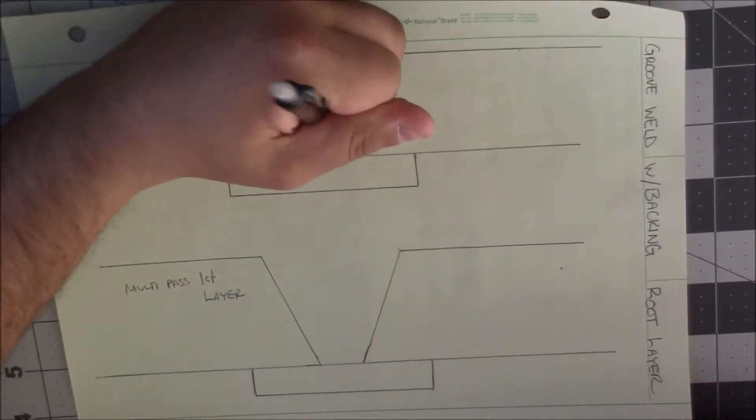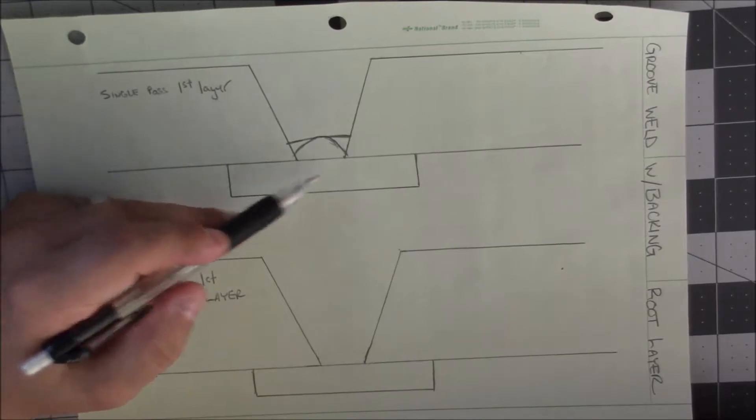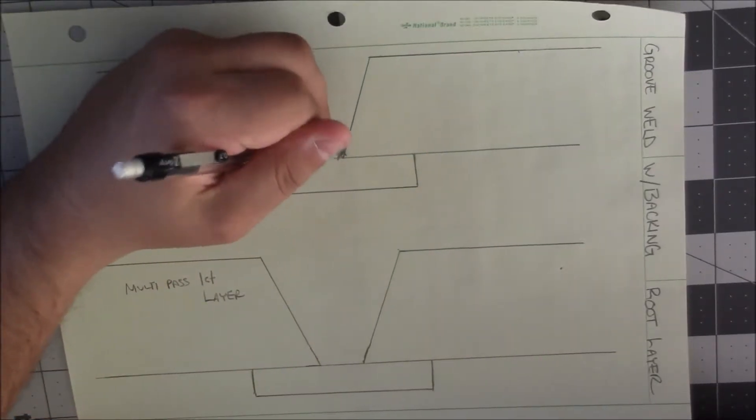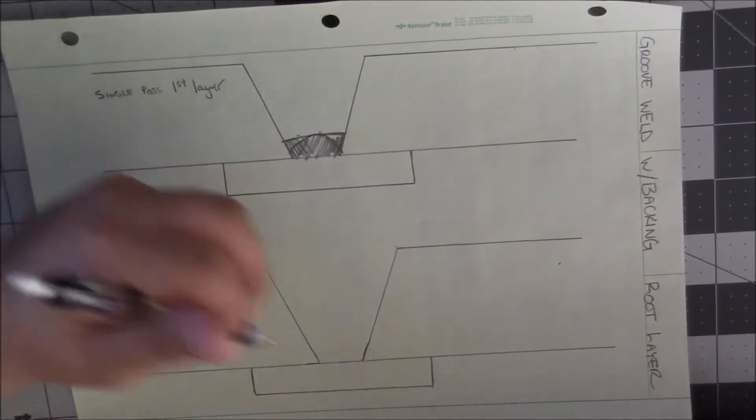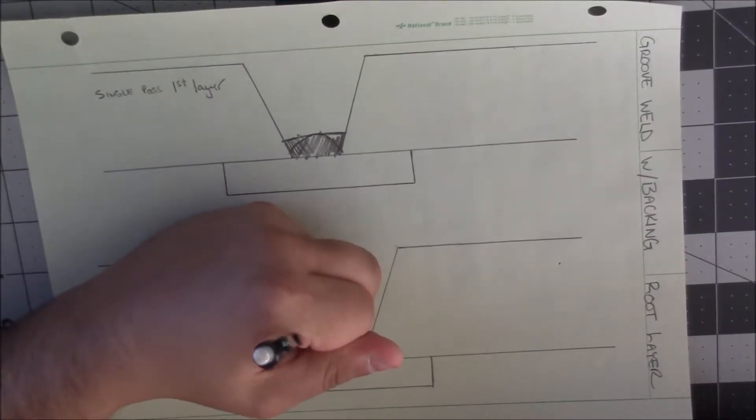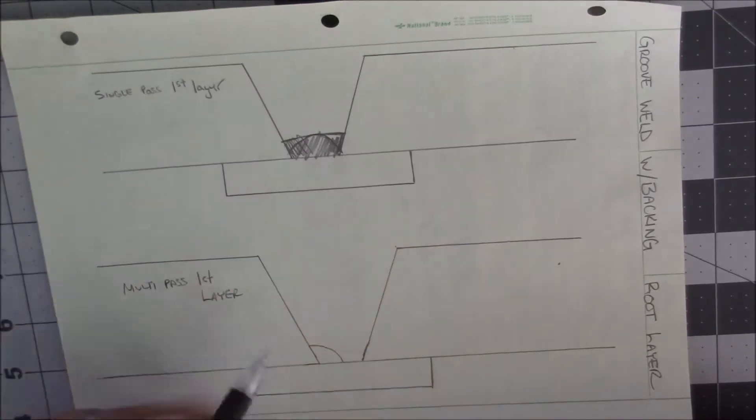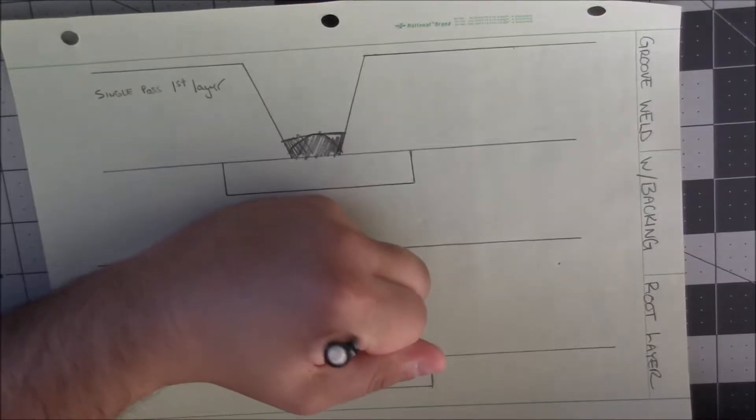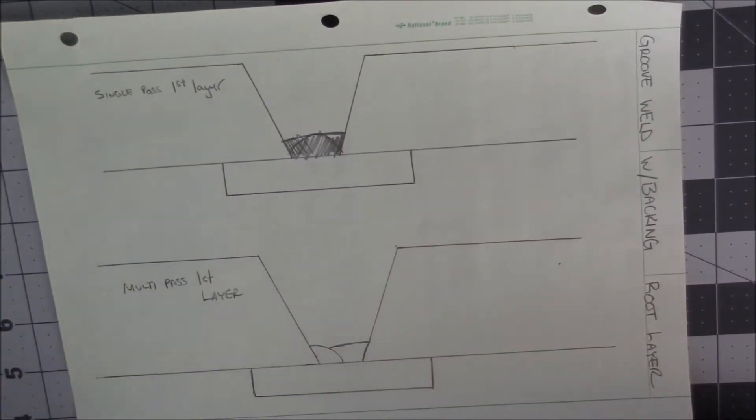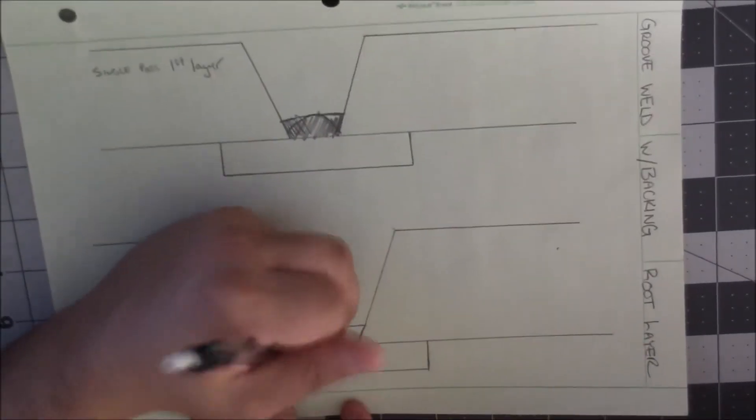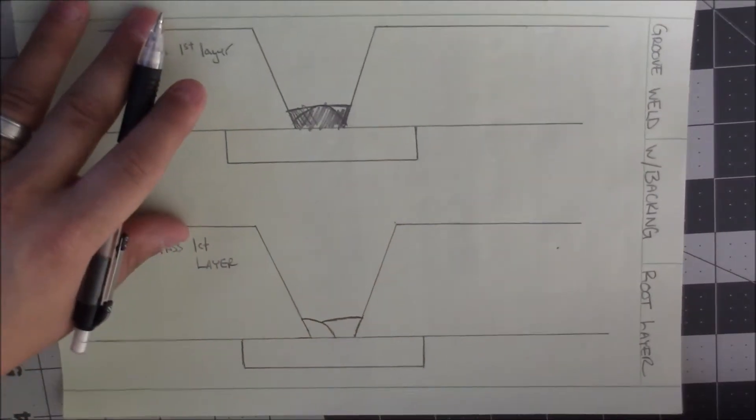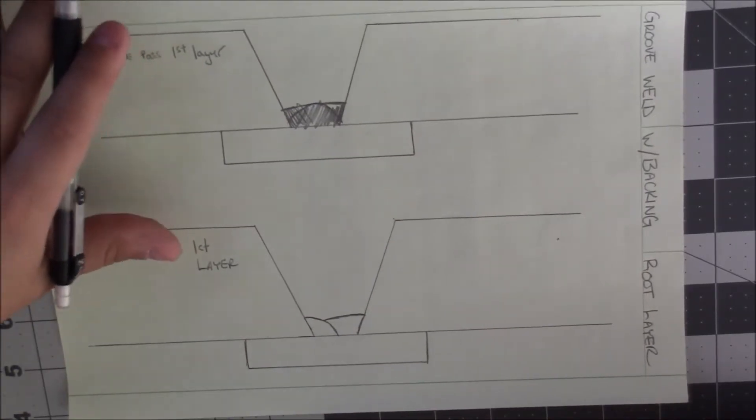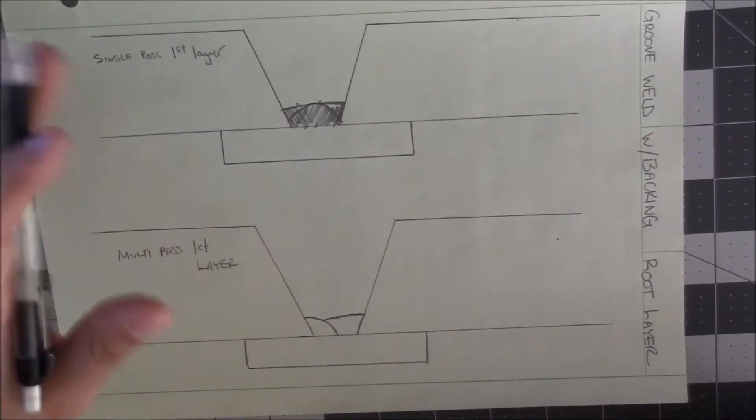So how can you avoid that altogether if you had the bad fit up? You can just give yourself the opportunity and a good land to do a two pass root layer. It's not frowned upon, it's not something that you'll catch any slack over, and it's not going to be a deal breaker, especially if you have a backing.